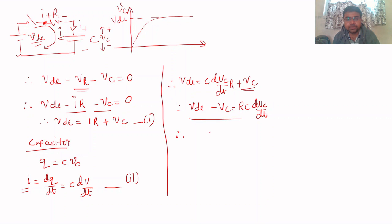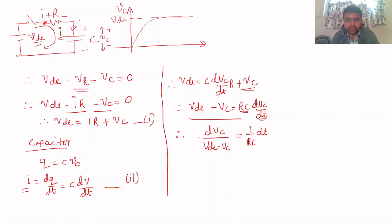Rearranging this equation by separating variables: dVC / (VDC - VC) equals (1/RC)·dt. Taking integration on both sides — the left side with VDC minus VC in the denominator will give a natural logarithm.